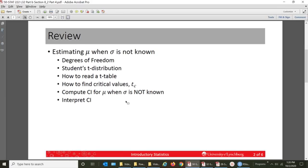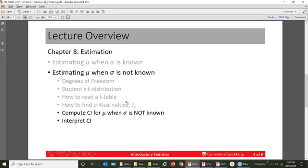We're going to do the same in this video, so we're going to continue with a second example, computing the confidence interval for mu when sigma is not known, and interpreting that confidence interval. So let's get started with this example.